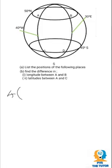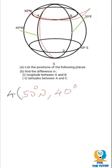When you start with longitude - sorry, this latitude. Position A is at latitude 50 degrees north and its longitude is 40 degrees west.